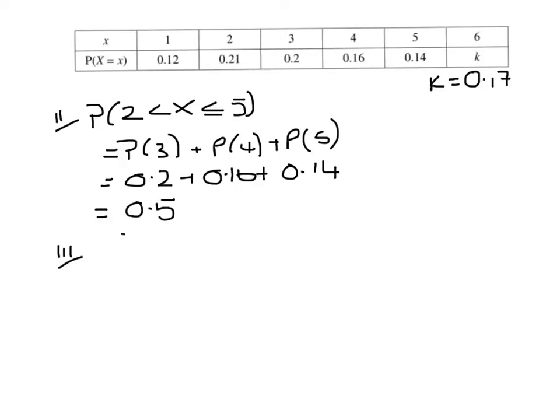Part 3, first thing we're asked to find is the expected value of x, so that is the sum of the x values times their probabilities. 1 times 0.12 plus 2 times 0.21 plus